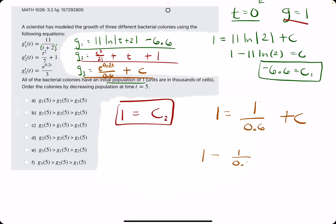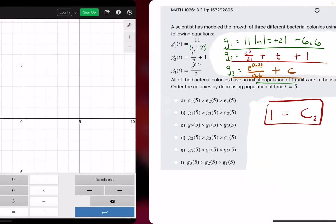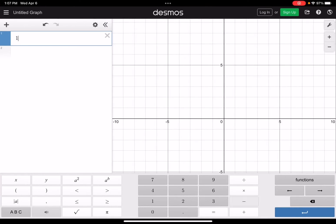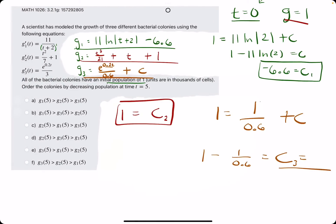So 1 minus 1 over 0.6 equals c3, and that'll be equal to negative 0.6 repeating or negative 2 thirds. So c3 is negative 2 thirds. I'll just call it minus 2 thirds. All right, we're on the home stretch.